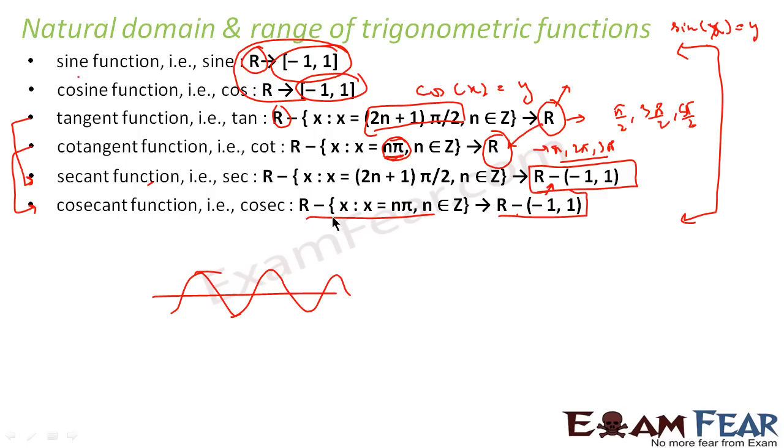For this part, if you see, sin and cos can take any real number. And the tan and sec, because both has 1 by cos in the denominator, can't take 2n plus 1, pi by 2 form.